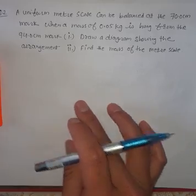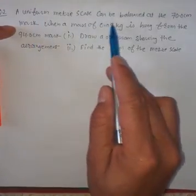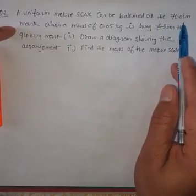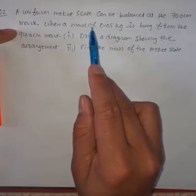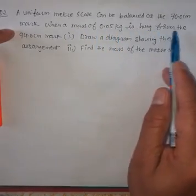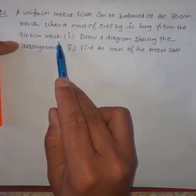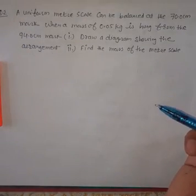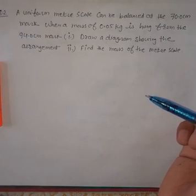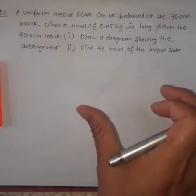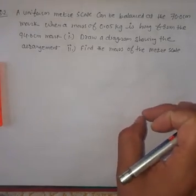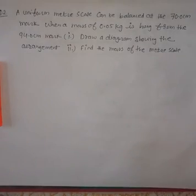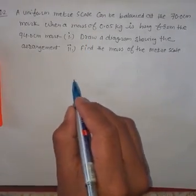The second question: a uniform meter scale can be balanced at the 70 centimeter mark when a mass of 0.05 kilogram is hung from the 94 centimeter mark. Draw a diagram showing the arrangement and find the mass of the meter scale. Remember: if a body is not pivoted at its center, it rotates due to its own weight — the scale's own weight acts at its center of gravity.